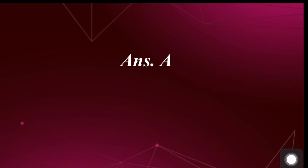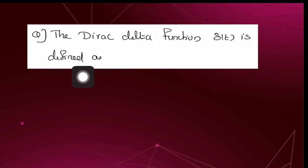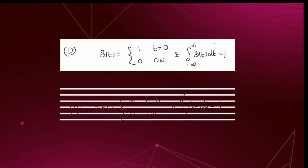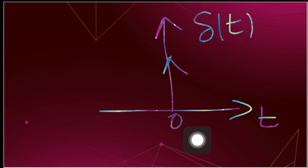The Dirac delta function δ(t) is defined as — four options are given. This is the graphical representation of the Dirac delta function δ(t). It has zero amplitude everywhere except at t = 0, where the amplitude is infinity, such that the area under the curve is equal to 1. Thus our answer is option D.